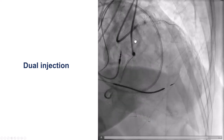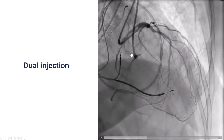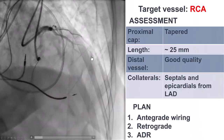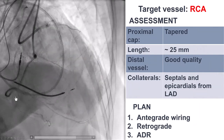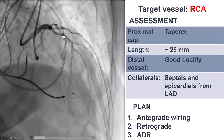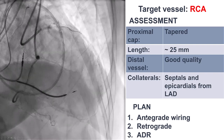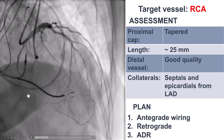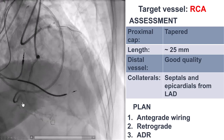We see here that we have engagement of the left main with the safety wire. There is a CTO of the mid-right coronary artery, and there is a tapered proximal cap. The distal vessel is of good quality, and there are both septal as well as epicardial collaterals going to the right coronary artery. Based on this, our plan was to start with antegrade wiring, and then if it didn't work, try to go retrograde through the septal branches, leaving ADR as a third option.